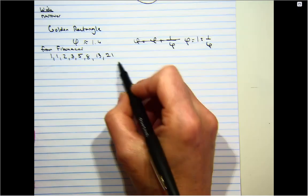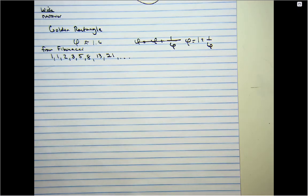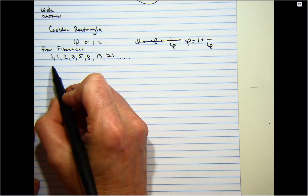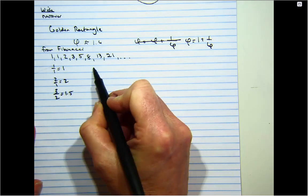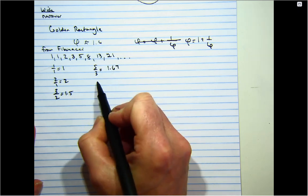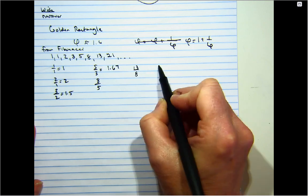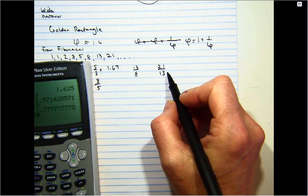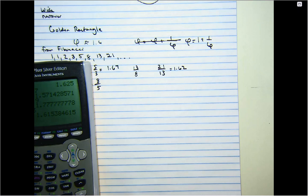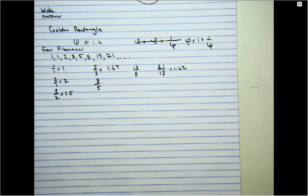The Fibonacci sequence has ratios: if you take the second number divided by the first, that's like taking a rectangle and dividing the long side by the short side. So 1÷1 = 1, 2÷1 = 2, 3÷2 = 1.5, 5÷3 = 1.67, then 8÷5, 13÷8, 21÷13 — the longer this went on, the closer we got to the exact value of phi. So 21 divided by 13 is very close.